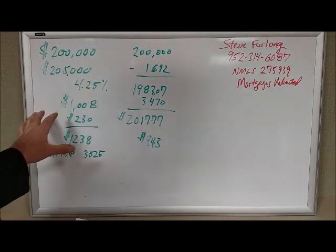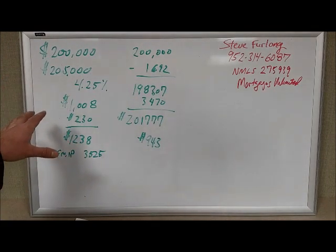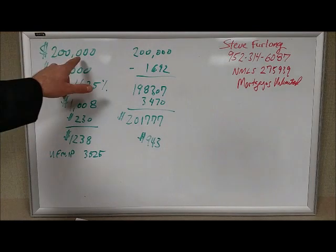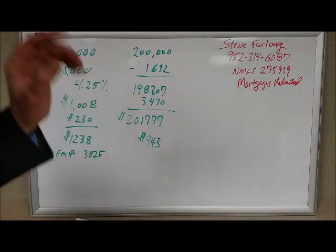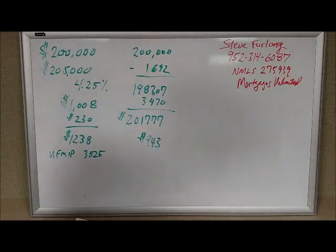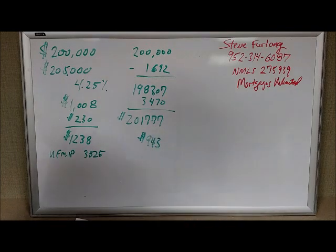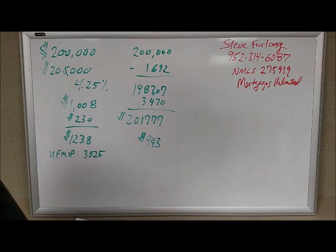Now, you currently have an escrow account with your old loan. What happens to that money? That is your money. And so when you pay off your existing loan, the servicer of your existing mortgage has 30 days to refund that escrow money to you. You might want to call them, and if you're refinancing, have them put a hold on the escrow account so they don't send any checks out to the county or your home insurance company.